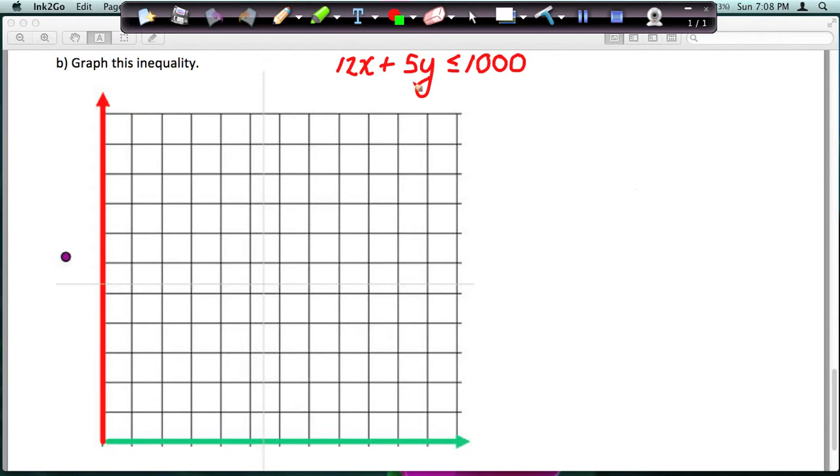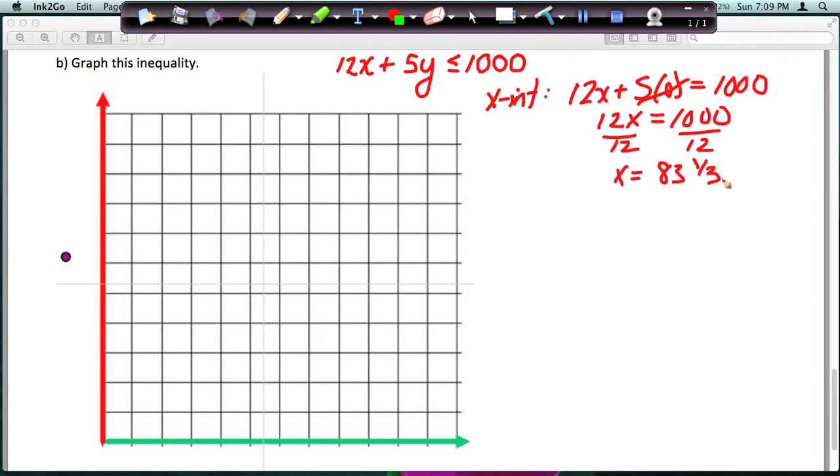I think the easiest way to graph this would be to find the intercepts, so that I know where on the X axis I hit and where on the Y axis I hit. So let's find those. So we just did this a little bit ago. For the X intercept, remember that just means plug in 0 for Y and solve for X. And I'm going to ignore the inequality. It's just an equal sign right now when I'm finding the intercepts. So 5 times 0 is 0. Basically that goes away, and you're solving 12X equals 1,000. Divide both sides by 12, and you get X equals 83 and a third or 83.3 repeating. Either one is fine.